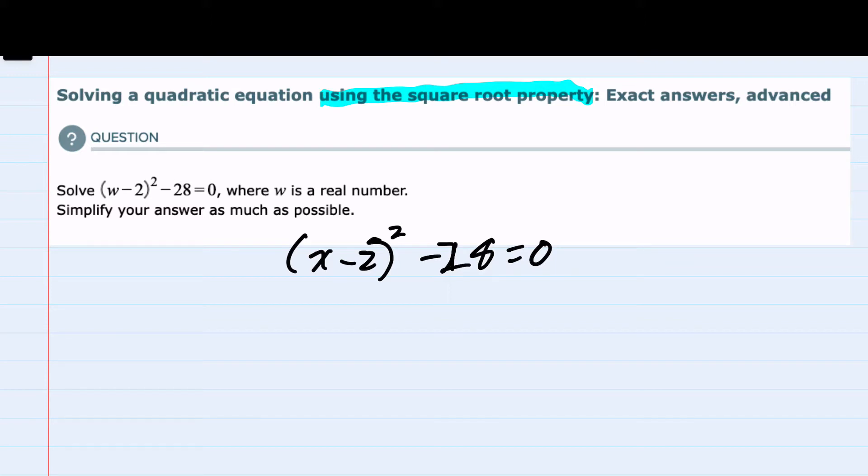To solve using the square root property, I see that I have a term being squared. I would want to isolate that, and I can do so here by adding the 28 to the other side of the equation.